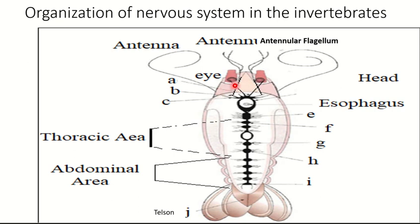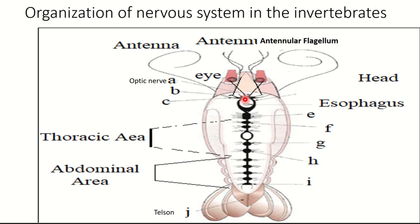In the head there are three pairs of nerves. We have the optic nerve — this is the optic nerve. The optic nerve receives information from the eyes. As you can see, there is a pair of optic nerves.